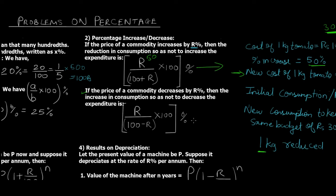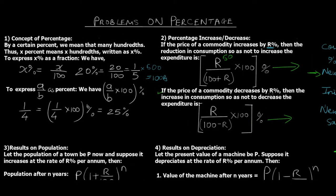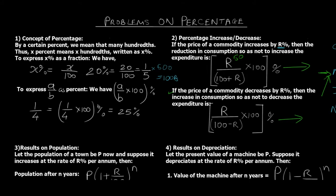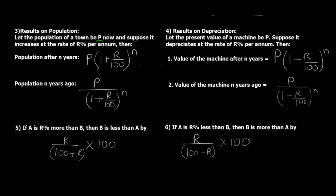We've just proved the first formula; the second case — price decreasing — works similarly in reverse. Moving to point three: results on population. Let the present population of a town be P, increasing at r percent per annum. Population after n years = P × (1 + r/100)^n — similar to the compound interest formula. Population n years ago = P ÷ (1 + r/100)^n, so past population uses division instead of multiplication.